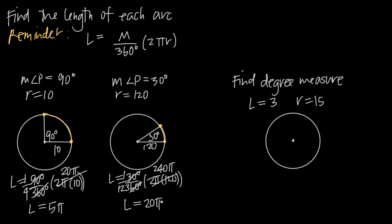Again, we'll leave it in terms of π, but you could plug in a decimal or fractional approximation for π if you wanted to. Now, what about this next example? Here we've been asked to find the degree measure of the arc, given the arc length and the radius, so we're going to have to work backwards. The radius is 15 and the arc length is 3 — we need to find the degree measure.